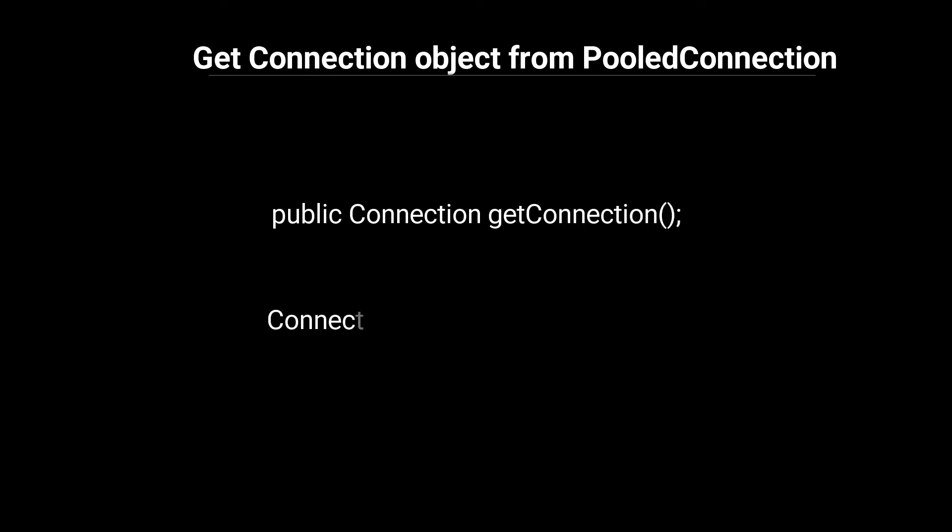Step 4: Get the Connection object from the PooledConnection. To get the Connection object from the PooledConnection we use the method: public Connection getConnection(). For example: Connection con = pc.getConnection();